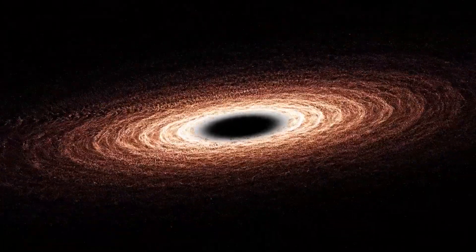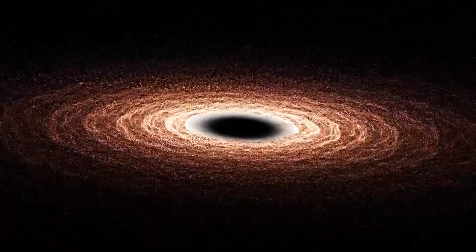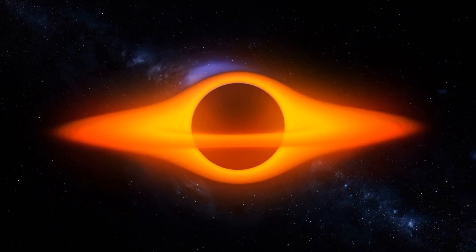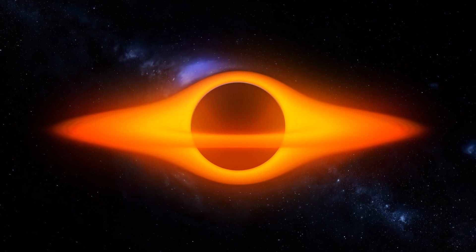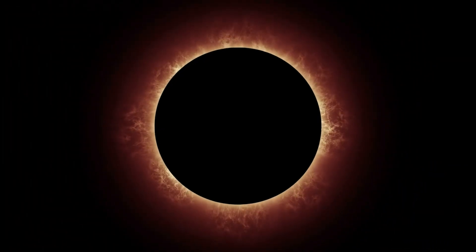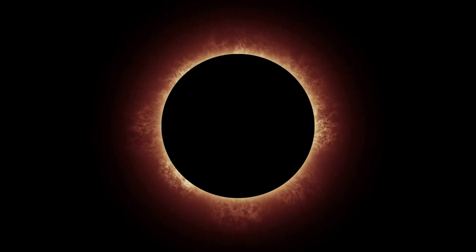General relativity also predicts the existence of black holes, regions of space where the gravitational pull is so strong that nothing, not even light, can escape from it. The edge of a black hole, the event horizon, marks the boundary beyond which gravity is inescapable.